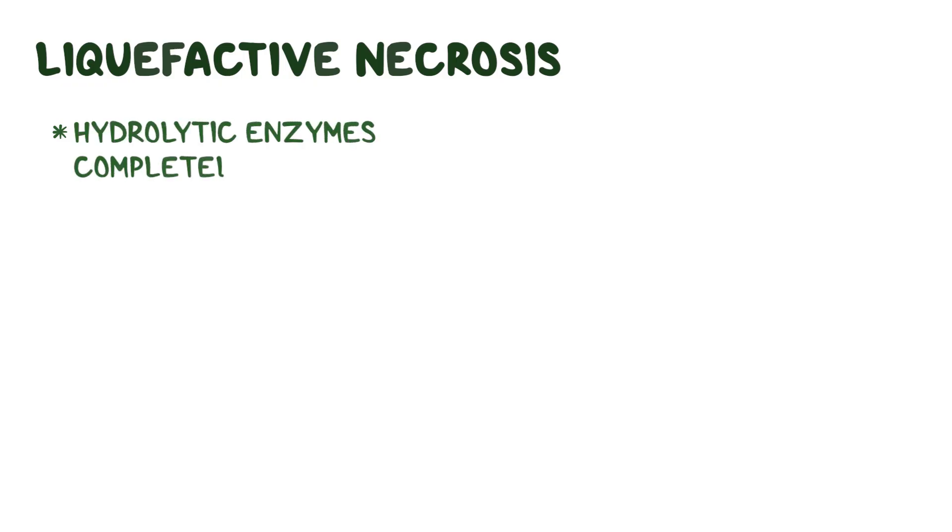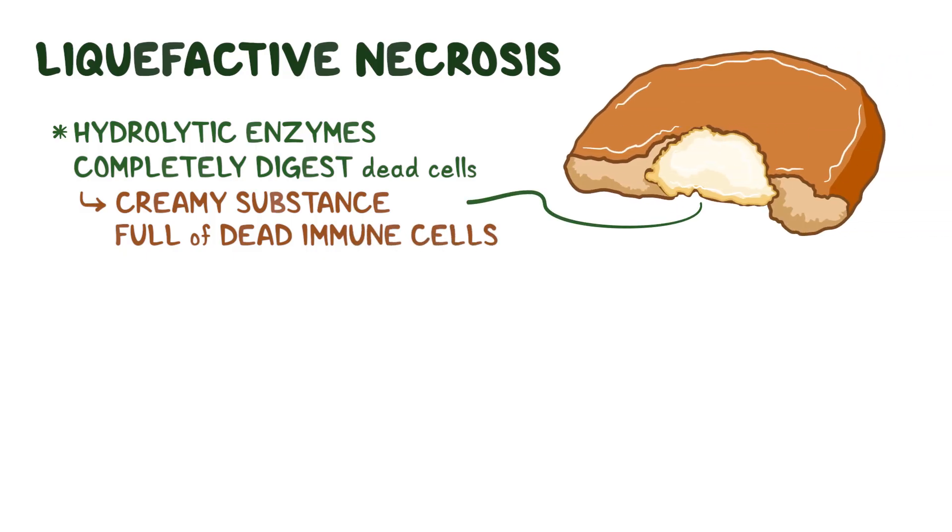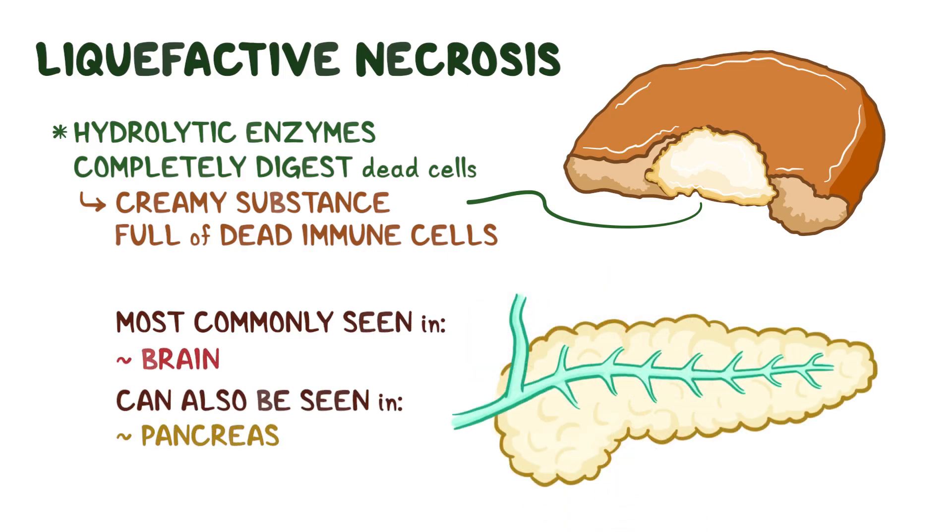Next, there's liquefactive necrosis, that occurs when hydrolytic enzymes completely digest the dead cells into a creamy substance full of dead immune cells. Think of a cream-filled donut. Liquefactive necrosis is most commonly seen in the brain, however, it can also happen to pancreatic cells, or within an abscess located anywhere in the body.